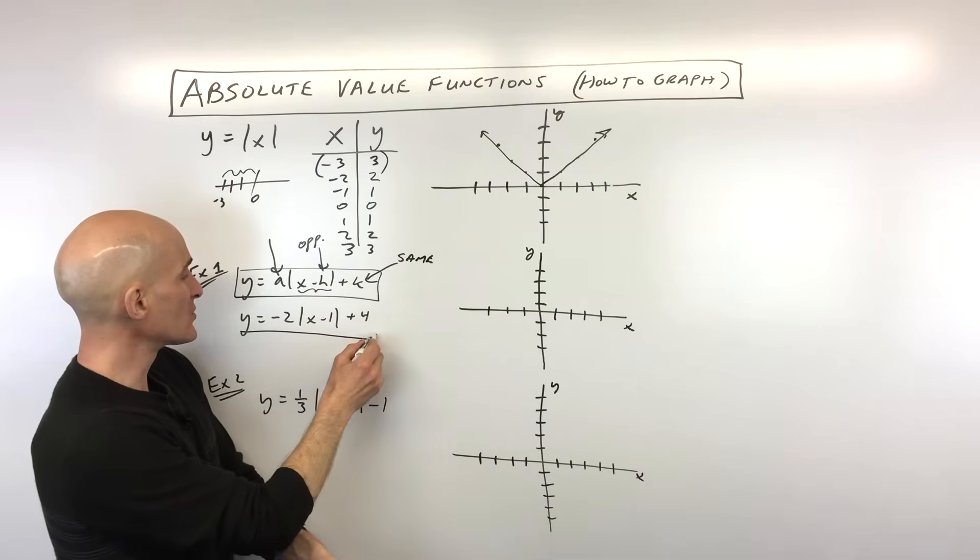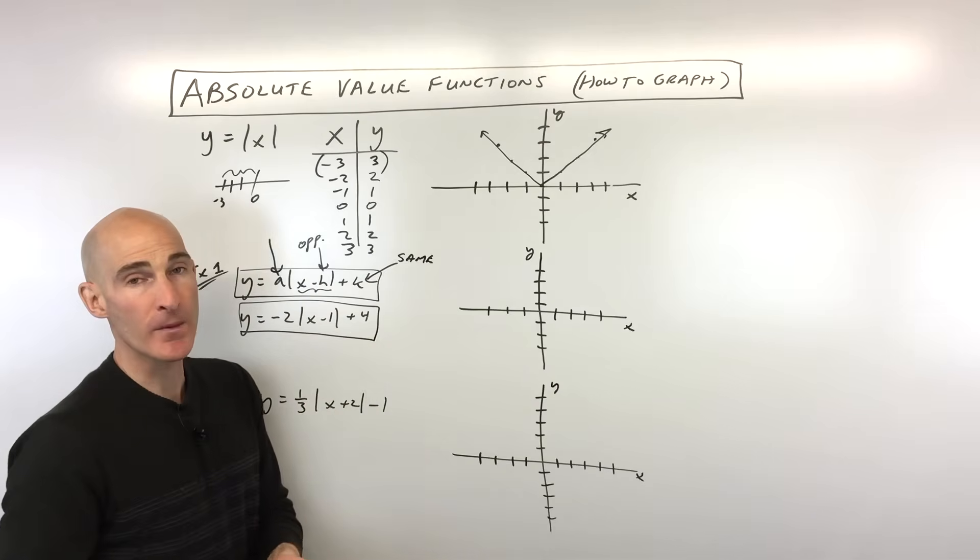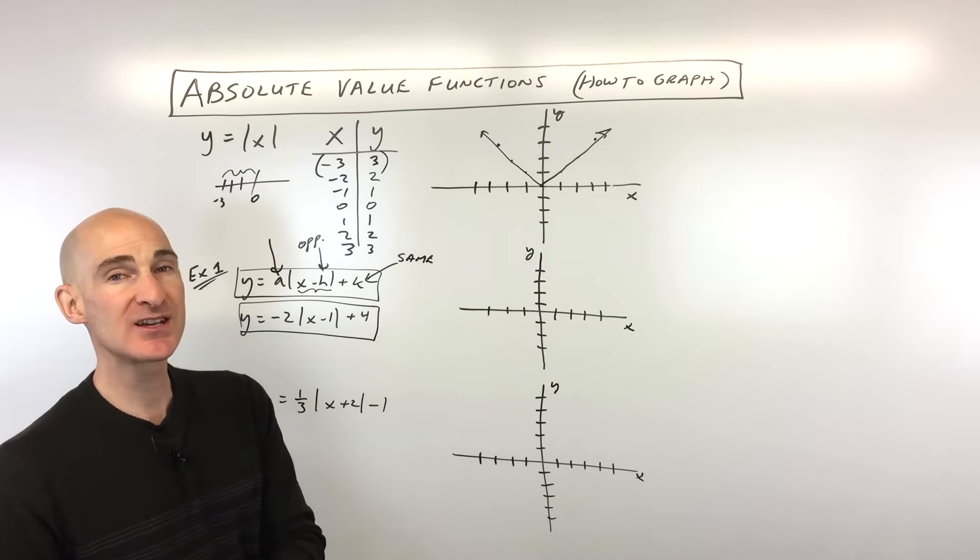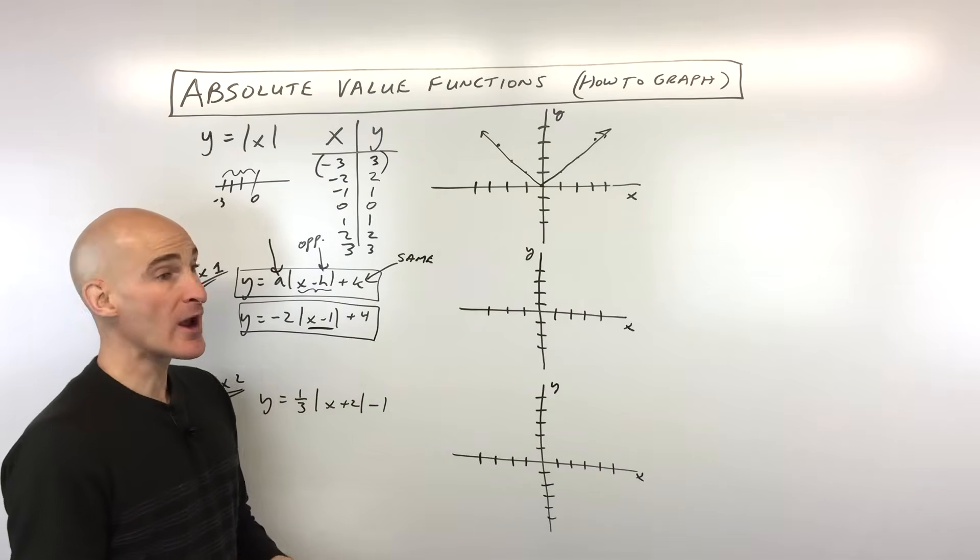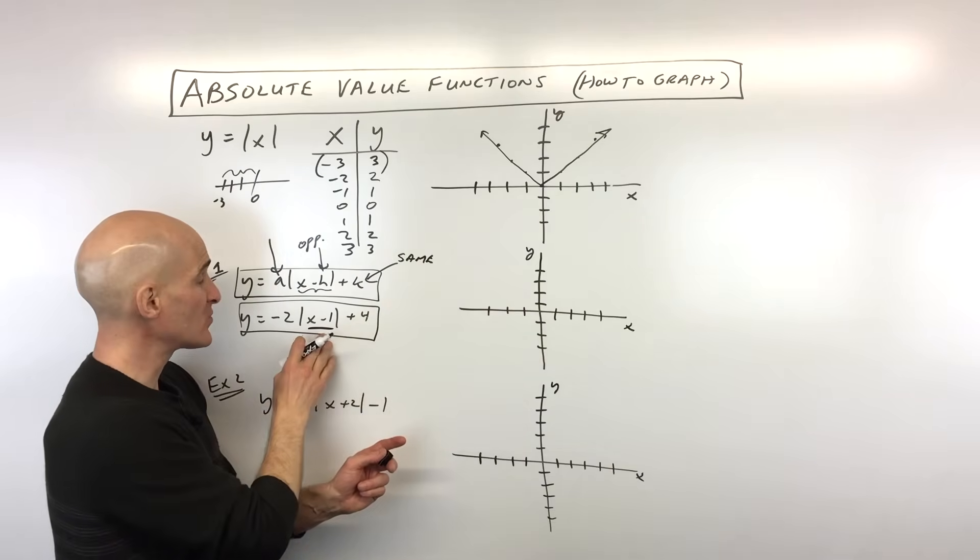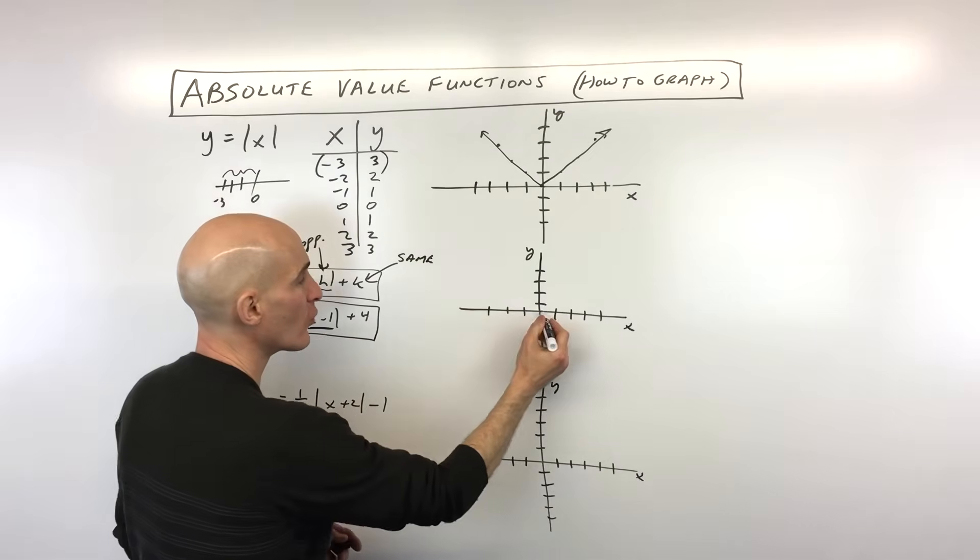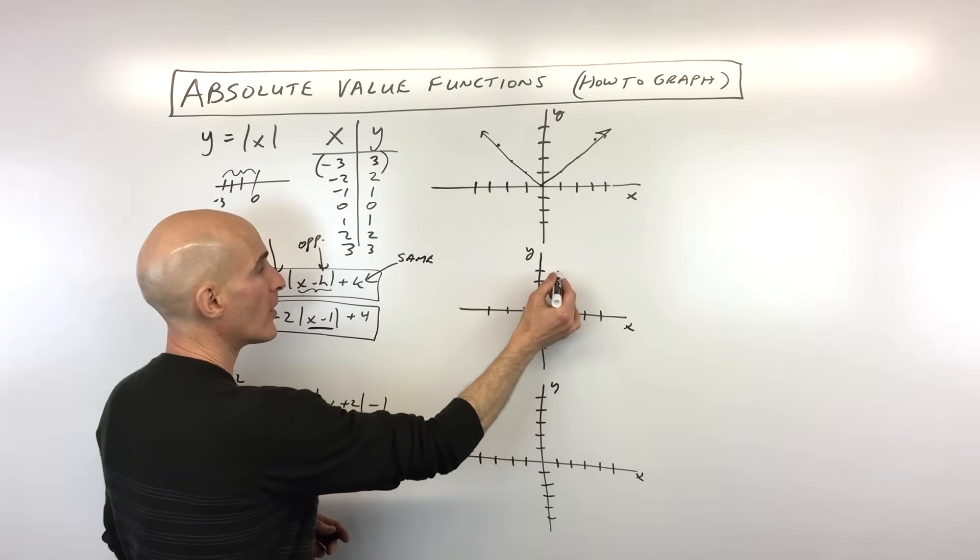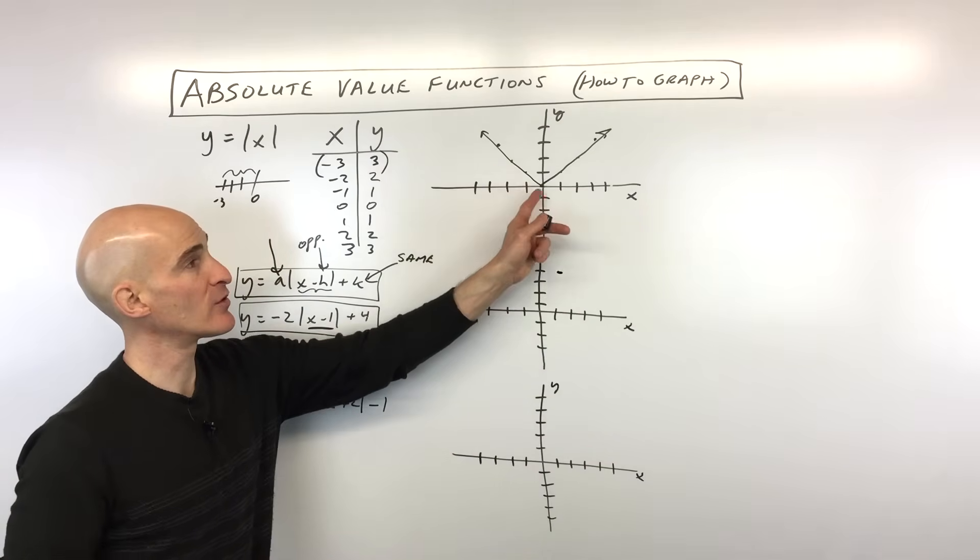So say, for example, this one here, y equals negative 2, absolute value of x minus 1 plus 4. What I like to do is I like to do the translation or the shift first. So what does this minus 1 right here do to the graph? Well, if you said right 1, you're right. And then plus 4, what does that do? Up 4. Remember, this one has the opposite effect. This one has the same effect as the sign. So minus 1, we're going to go right 1, up 4, and there is going to be our vertex. Our vertex is this point here where the graph bends.